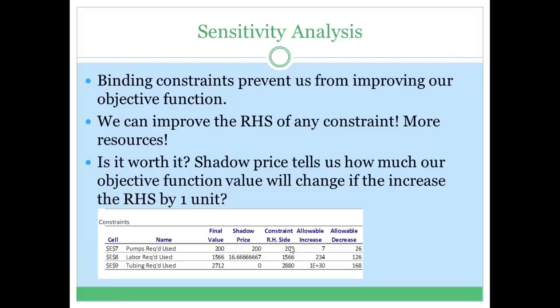This means that this constraint is binding. You can just look at this table — it gives you the left-hand side final value and the right-hand side which is already given in the problem. The second constraint is also binding. The third constraint, however, we see that the final value is less than the right-hand side, which means that this is a non-binding constraint.